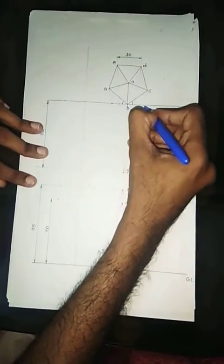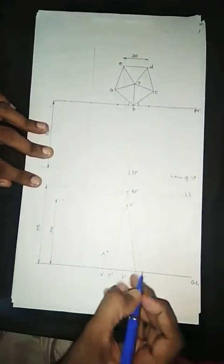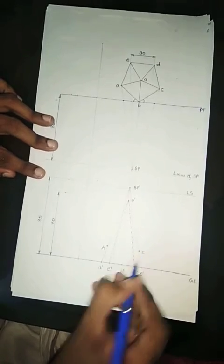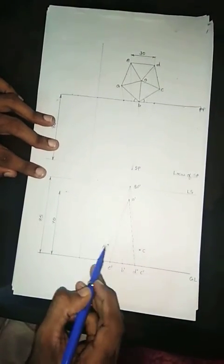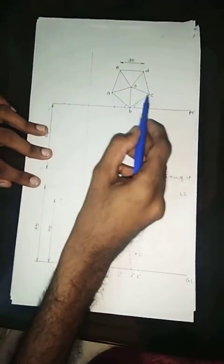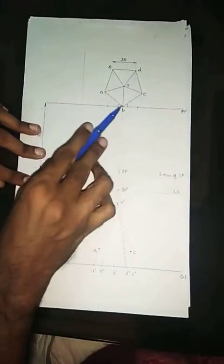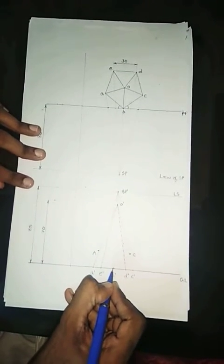Similarly, next we will be projecting C. If I am projecting C, it will be falling somewhere here. Make sure A and C are lying on the same horizontal line. In top view A and C will be lying on the same horizontal line. So in perspective also A and C should lie on the same horizontal line. Small b is touching picture plane, so this itself will be capital B. You need not mark it separately.